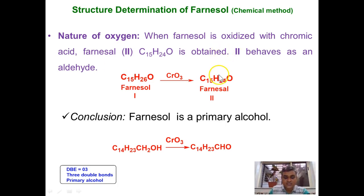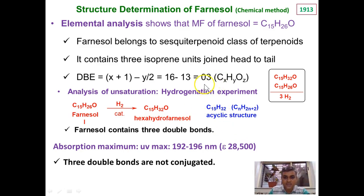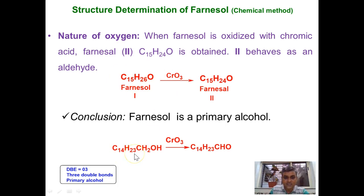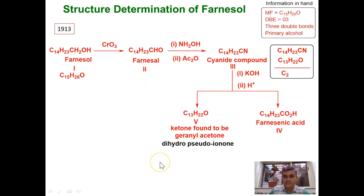Now we need to find the nature of the oxygen in Farnesol. Farnesol is subjected to oxidation and the resulting product has molecular formula C15H24O. Analysis shows it is an aldehyde, called farnesal. Since oxidation of the starting material gives an aldehyde, the starting material must be a primary alcohol. Thus Farnesol is a primary alcohol, and we can rewrite its molecular formula as C14H23·CH2OH. So far we have proved 3 degrees of unsaturation corresponding to 3 double bonds, and identified the oxygen as a primary alcohol.